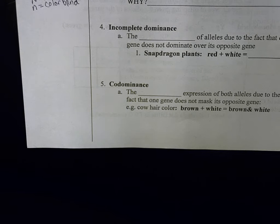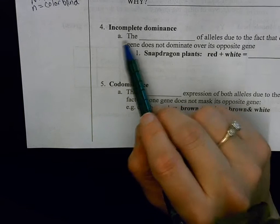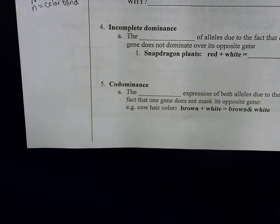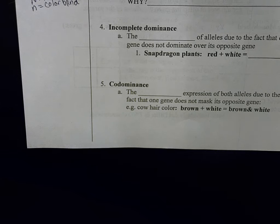I'm now going to show you how to set up a Punnett square for incomplete dominance. In incomplete dominance, neither trait is dominant, which means neither trait can mask another allele.